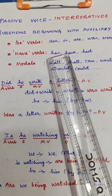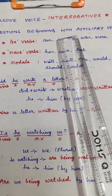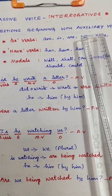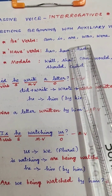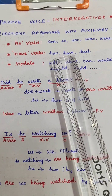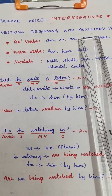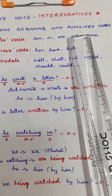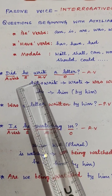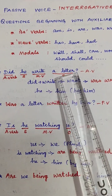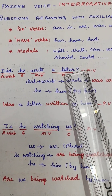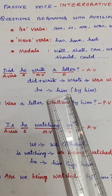The question beginning with auxiliary verbs — the answer is only yes or no. That is the answer. Auxiliary verb starts with questions, and the answer is yes or no. How do you change the active voice to passive voice?